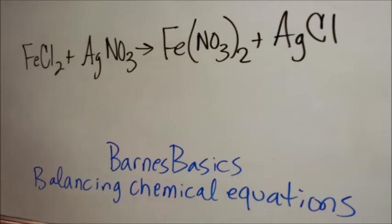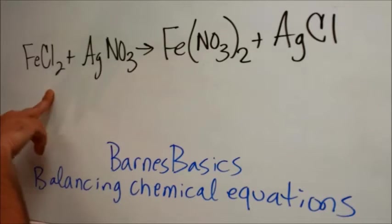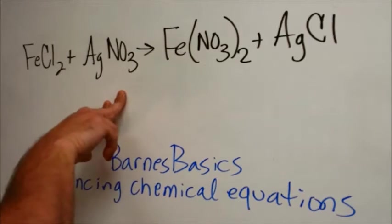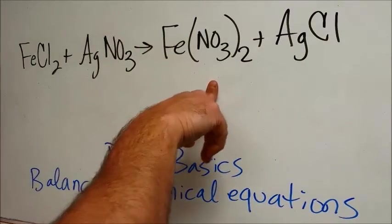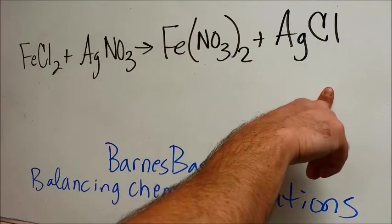In this chemical equation, we are going to look at iron(II) chloride mixed with silver nitrate, which makes iron(II) nitrate plus silver chloride.